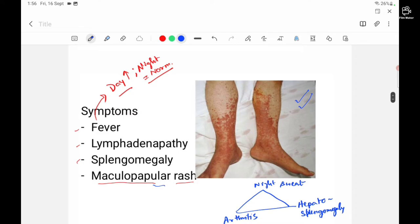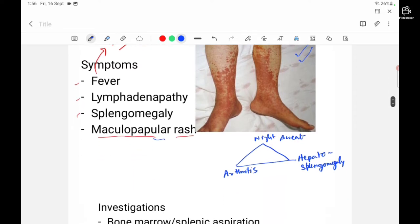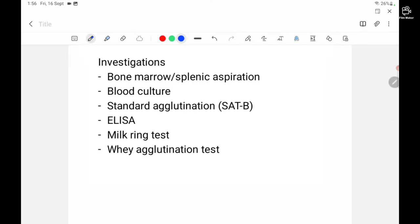For investigation, bone marrow aspiration or splenic aspiration might be taken. Complete blood culture is usually done - it's a necessity. Standard agglutination test is done. Most of the time this standard agglutination or SATB gives a false negative result. The most reliable test is the ELISA. In animals, whey agglutination test and milk ring test can be done.